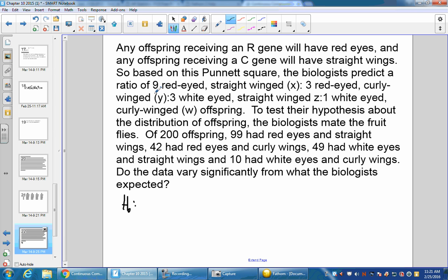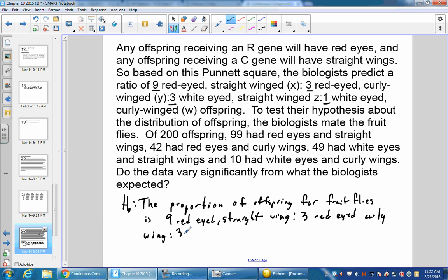So we have 9 to 3 to 3 to 1. Our proportion would be, so the proportions of offspring for fruit flies is 9/16 red-eye straight-winged to 3/16 red-eyed curly-winged to 3/16 white-eye straight-winged to 1/16 white-eye curly-winged.